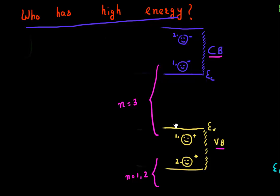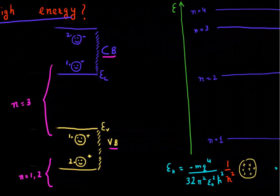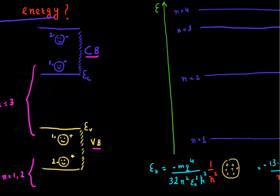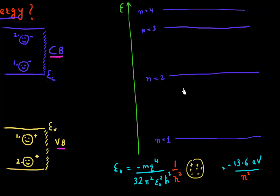To understand this, we can correlate this band diagram to the bond model and relate it to the energy levels in the case of a single atom. In the case of a single atom, we have these discretely spaced energy levels, and the energy of these levels increases as we go farther away from the atom. The energy increases as we increase the quantum number n.